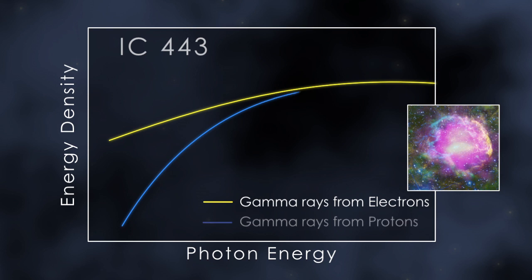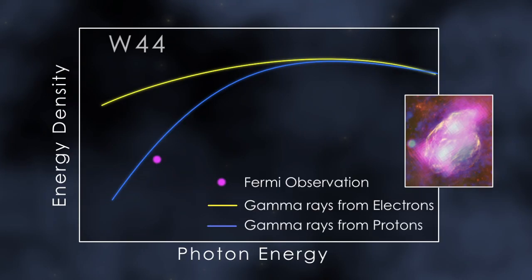Now, Fermi observations have done just that. They conclusively show these supernova remnants are accelerating protons. When they strike protons in nearby molecular clouds, they produce pions, and ultimately, the gamma ray emission Fermi sees.